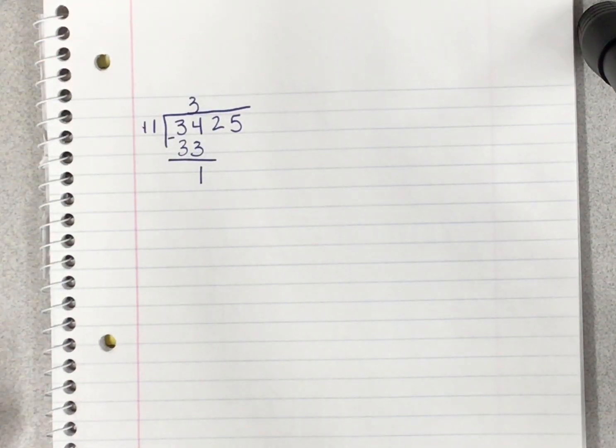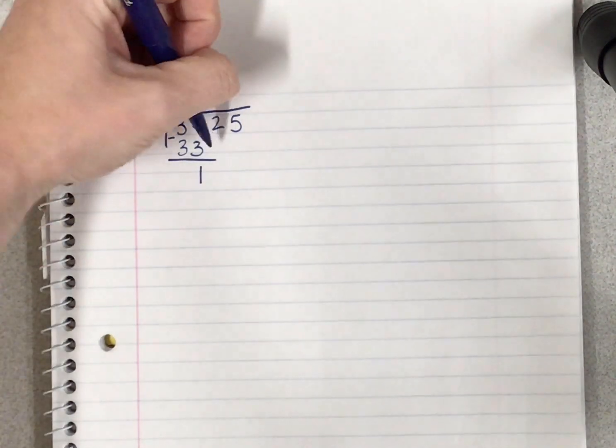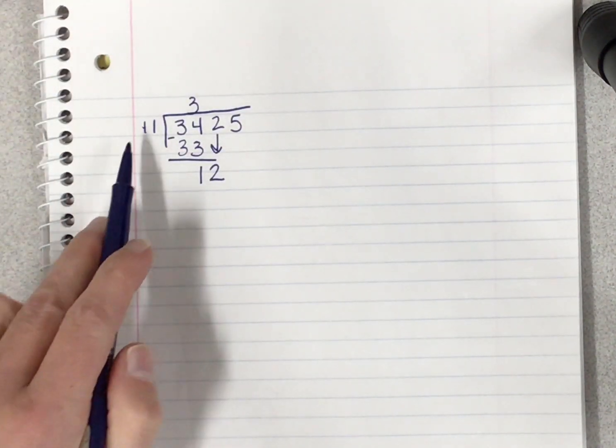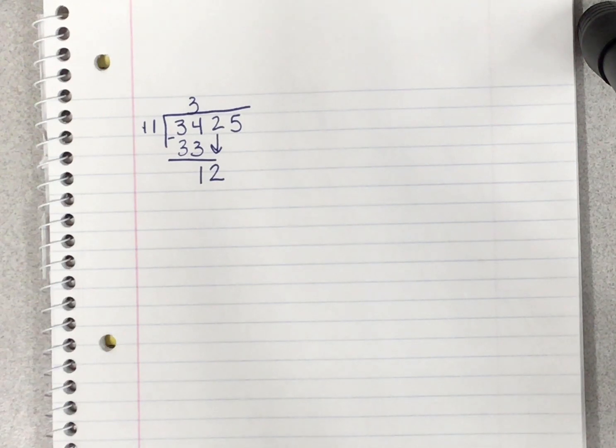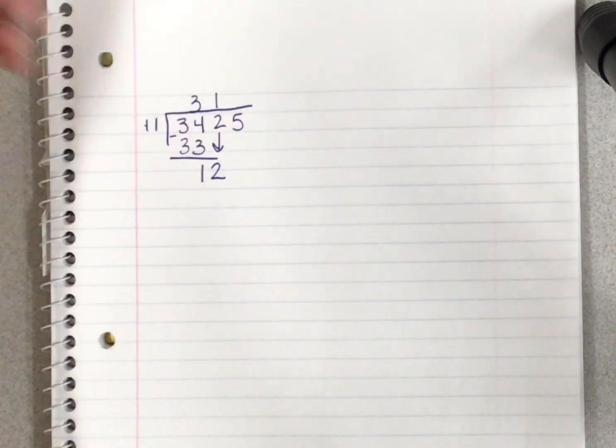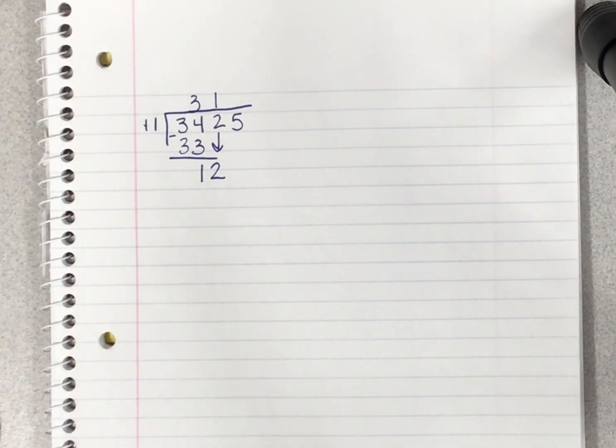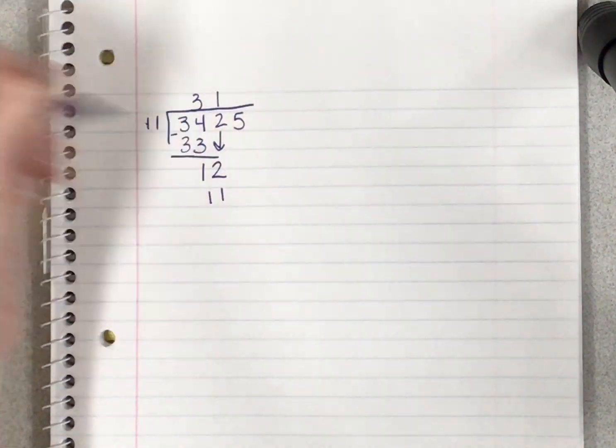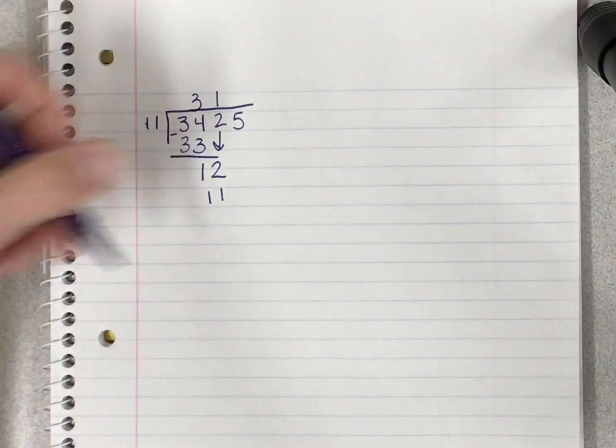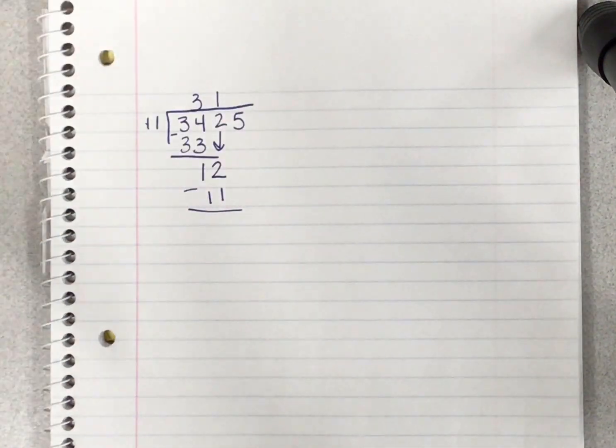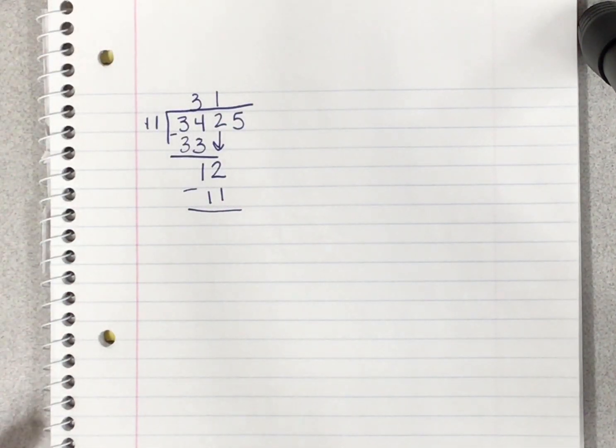I bring down my next number in line, which was 2. Next I ask myself how many 11s can go into 12 without going over. 11 can go into 12 one time without going over. I place my 1 above the 2 and I do that multiplication: 11 times 1 is 11. I place that below my 12 and I subtract. 12 minus 11 is 1.